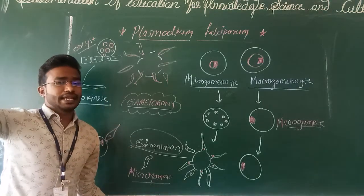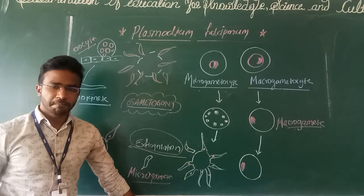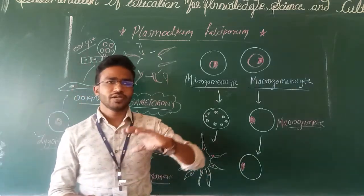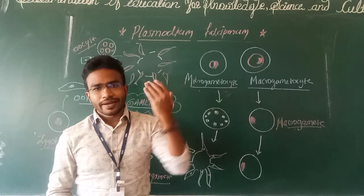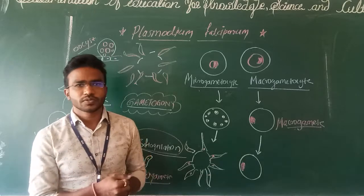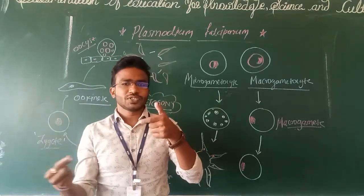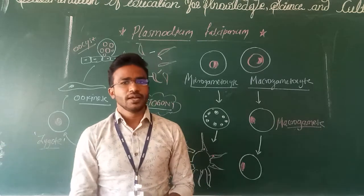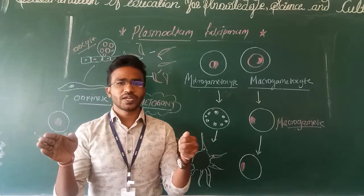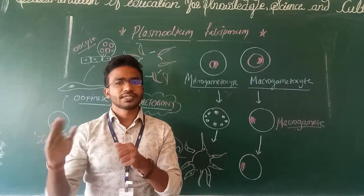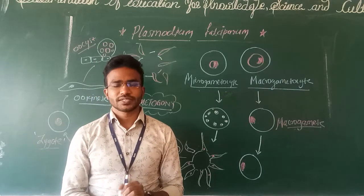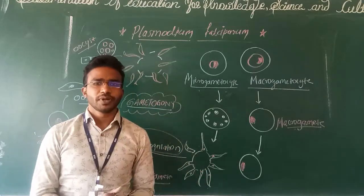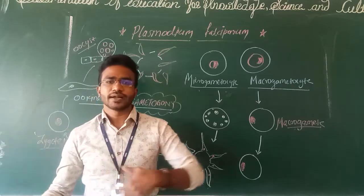The sporozoites are released and travel to the salivary gland of the mosquito. The mosquito then binds and adheres to the surface of a human being's skin. The mosquito inserts its proboscis and sporozoites are released into the human. From the salivary gland, sporozoites enter the human, travel to the liver, and form elongated trophozoites, schizonts, and merozoites.